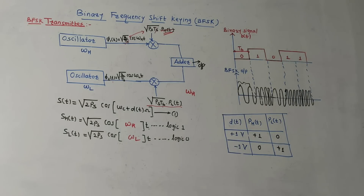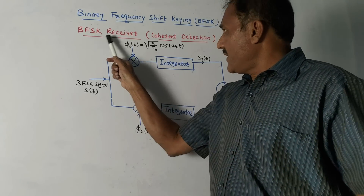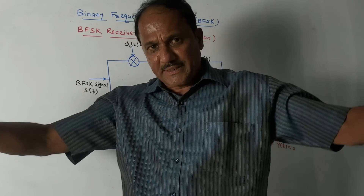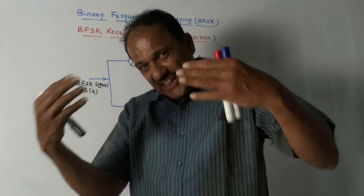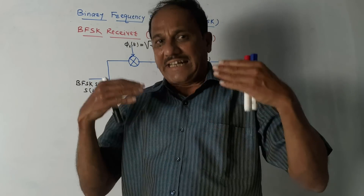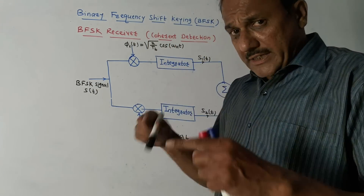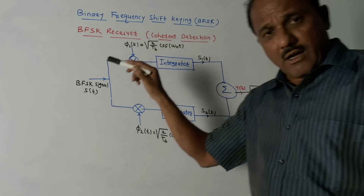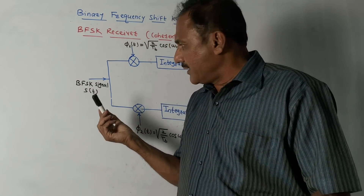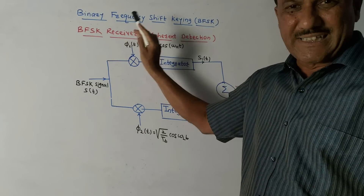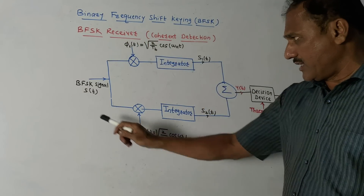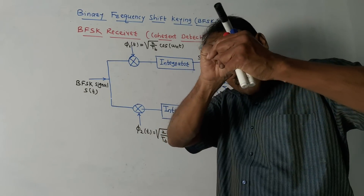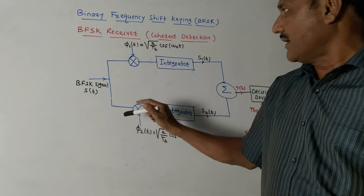The next part is the BFSK receiver, also called the detector. The BFSK signal is transmitted through a channel and at the receiver it is identified whether the received bit is 0 or 1. There are two types of detection: coherent detection and non-coherent detection. This block diagram is related to coherent detection. At the input side, we are receiving the BFSK signal s(t).